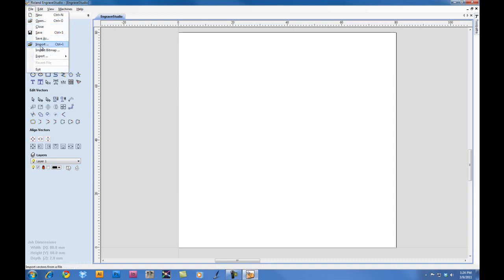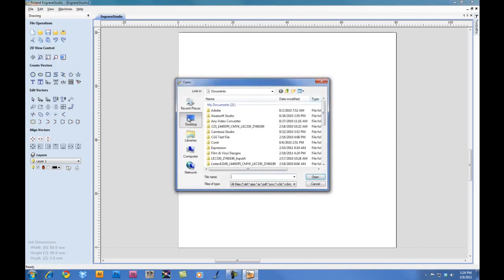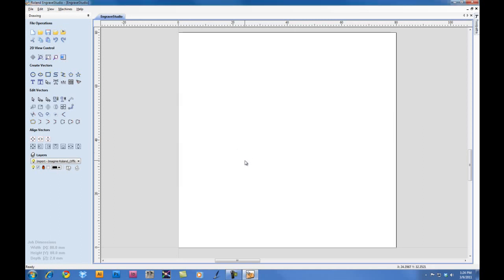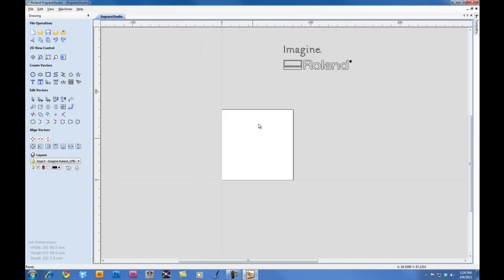Click File and Import. We're going to import an Adobe Illustrator file. We can also import EPSs as well. Once we import the file, we can select it. Under the Align Vectors, select Center in Material. We can resize the graphic, and if you hold the Shift key down, it will keep it proportional to our screen.